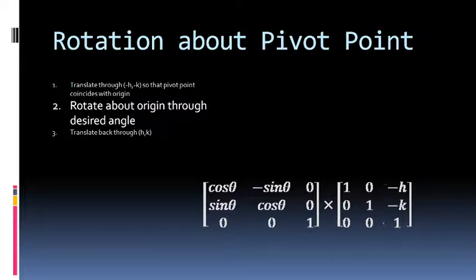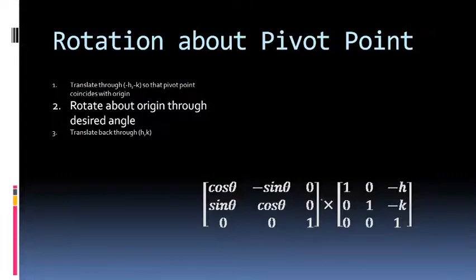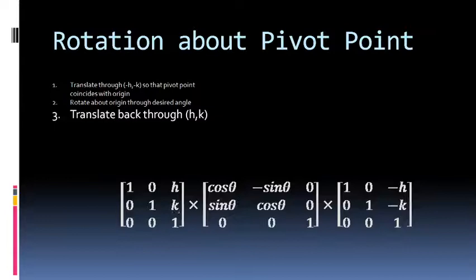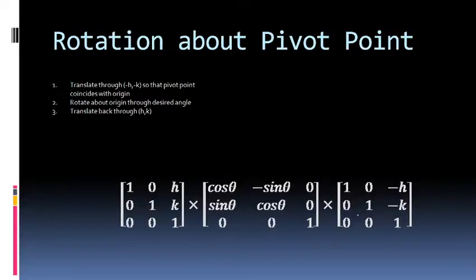Note that the first transformation is written on the right-hand side, and the next transformation is written to the left of it. The third step is to translate back with parameters h and k, so the third matrix is another translation matrix but this time with translation parameters h and k instead of minus h and minus k. After combining — that is, multiplying — these three matrices, we get a resultant 3×3 matrix.